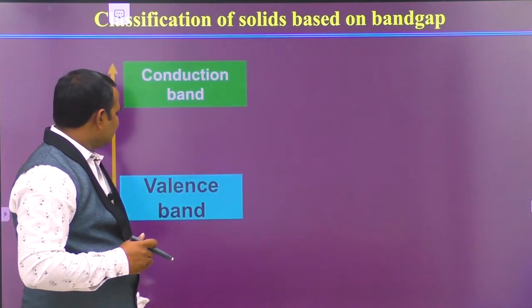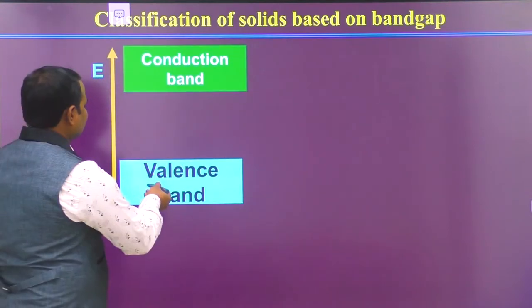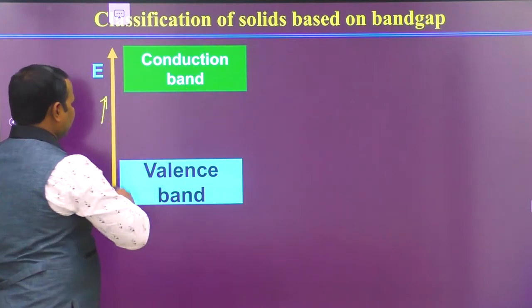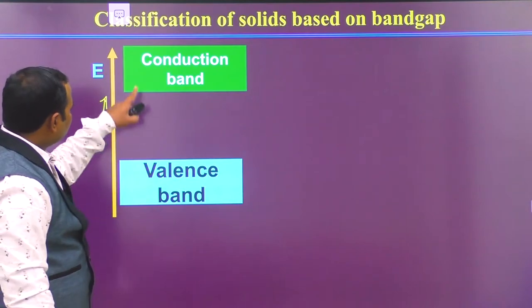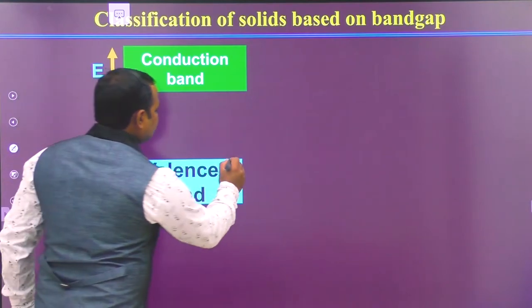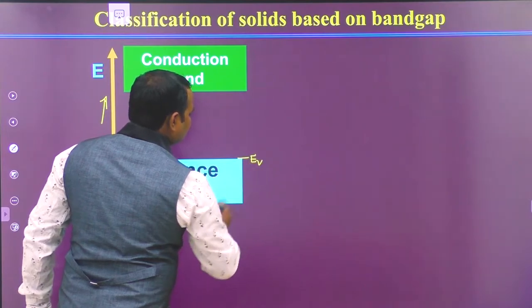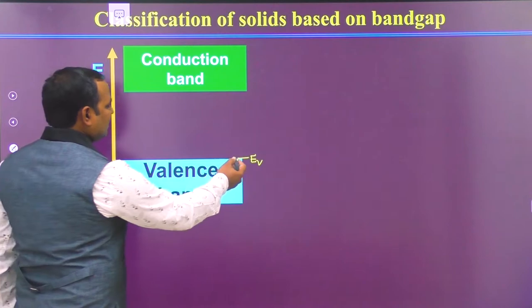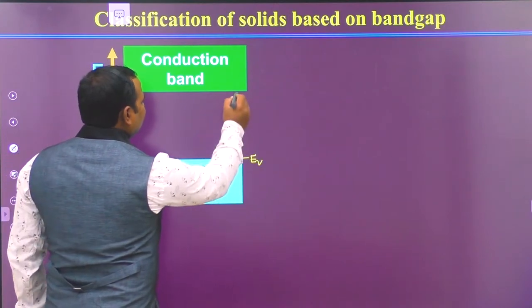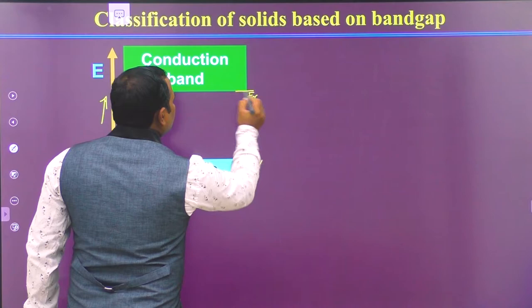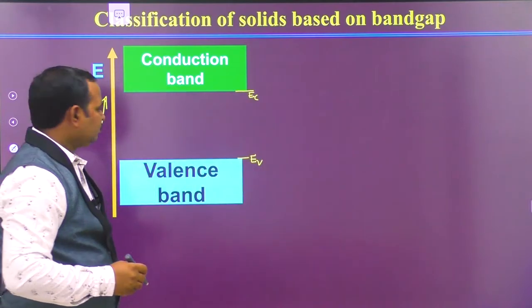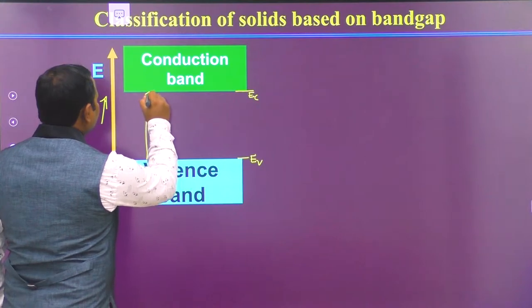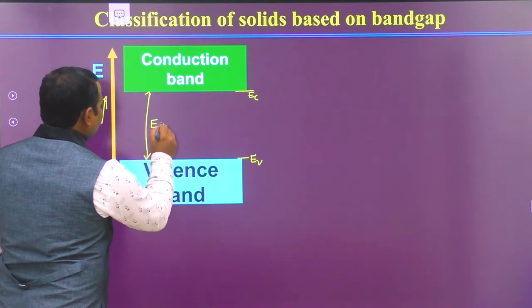You can see here: this is the valence band, this is the conduction band, and this is the increase in the energy side. The top of the valence band is represented with E suffix V, and E suffix C represents the bottom of the conduction band. The difference between the top of the valence band and the bottom of the conduction band is called the band gap.